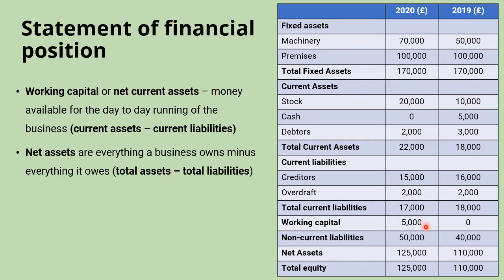Net assets represent the net worth of the business — everything it owns minus everything it owes. You add up all of the assets, both fixed and current, and take away all of the liabilities, both current and non-current. In this example, that gives a net assets figure of £125,000.